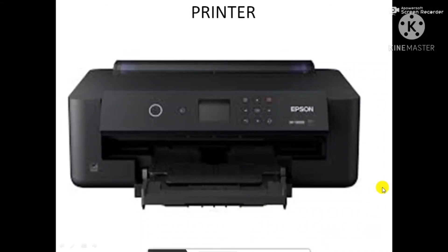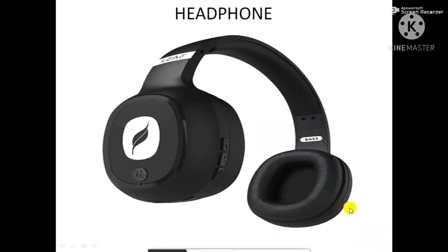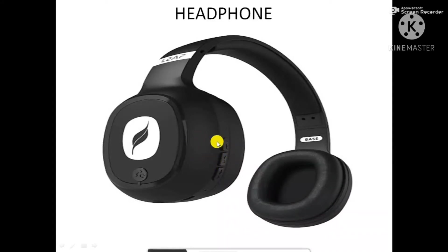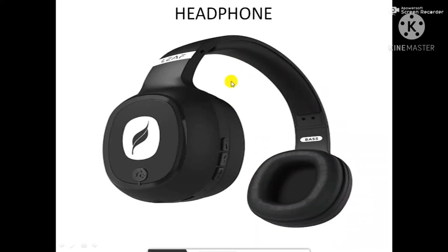Now let us see about headphones. This is a headphone — it is also an output device because sound comes out from it. It is a device consisting of a pair of earphones joined by a band placed over the head, for listening to music or speech.